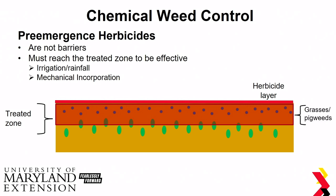Not all weeds are going to be affected by pre-emergence herbicides. Grasses and pigweeds — small seeded weeds — will grow into the treated zone and be killed as they take in the herbicide. But some larger-seeded things like common ragweed are actually going to start growing, grow through that treated zone, and a lot of them will be fine.